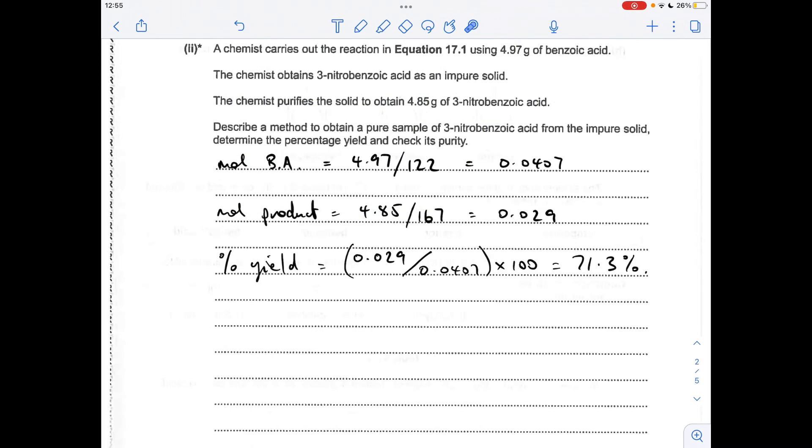Moving on to part B, I'll start with the percentage yield calculation. We've got moles of benzoic acid: 4.97 over its MR of 122, giving us that many moles. The moles of product is mass over its MR, which equals 0.029.